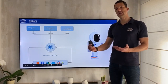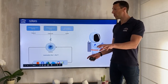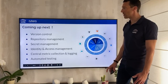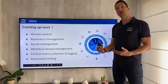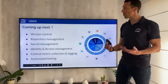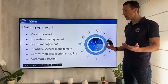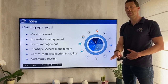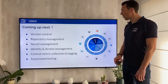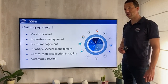So these are the things we will talk about in the upcoming videos. In the next video we will go into detail on where all the magic happens — and the magic happens in the centralized toolchain. So if we want to talk about infrastructure as code, we will talk about stuff like version control, repository management, secret management, identity and access management, centralized metric collection, logging and automated testing. All this good stuff we want to explain in upcoming videos, starting with a high-level overview of the centralized toolchain before going in depth on each individual topic.